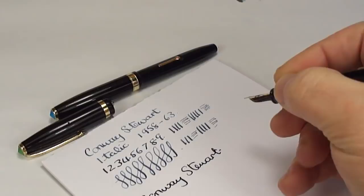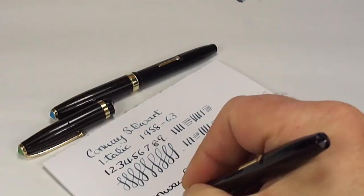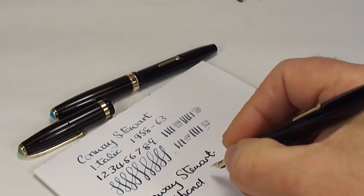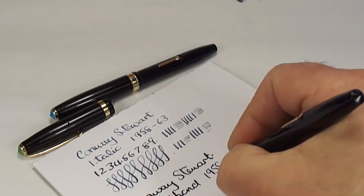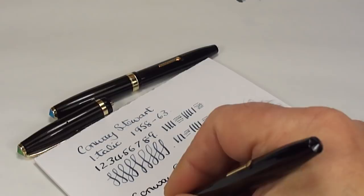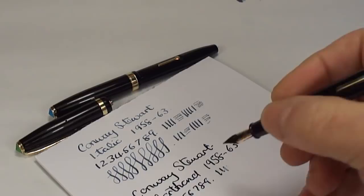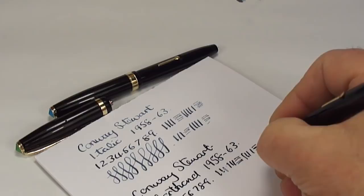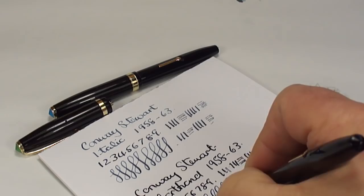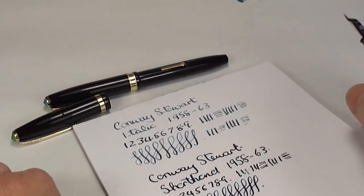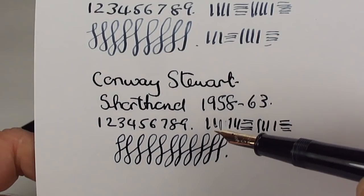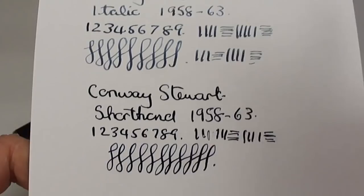Conway Stewart. And as we said, it's a shorthand nib. Once again, the same date. 1958 to 1963. And once again, writing nicely. Let's dip it in again. So, on this particular pen, I wouldn't say there's any variation. It's writing with a fine line. Let's give the nib a wipe. Let's show you that one. So, you can see the shorthand is a fine to medium line. There's no variation. But once again, writing very nicely.